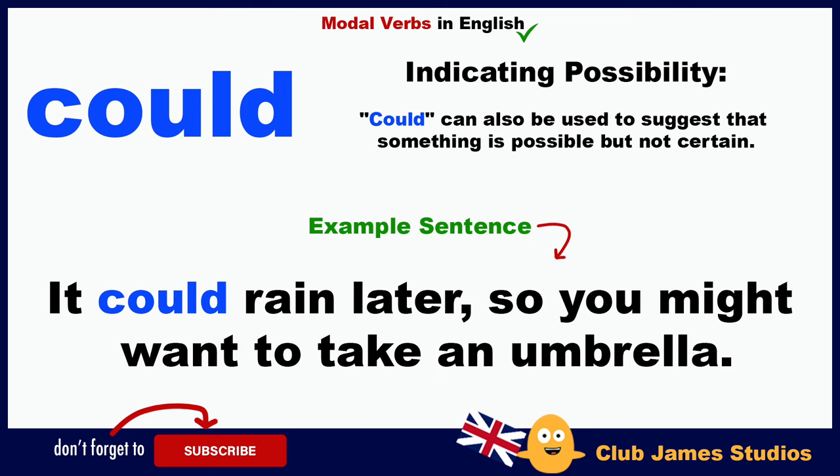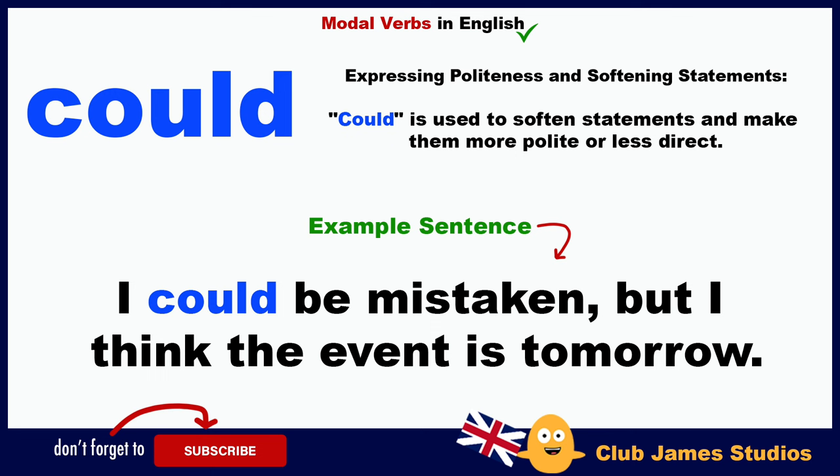Indicating possibility: 'could' can also be used to suggest that something is possible but not certain. Example: it could rain later, so you might want to take an umbrella. Expressing politeness and softening statements: 'could' is used to soften statements and make them more polite or less direct. Example: I could be mistaken, but I think the event is tomorrow.